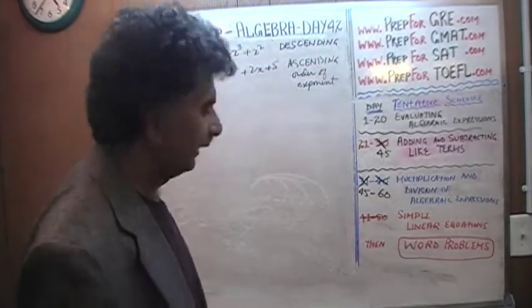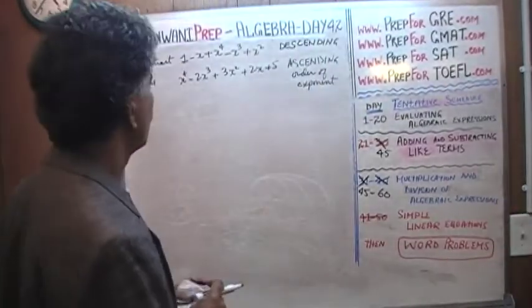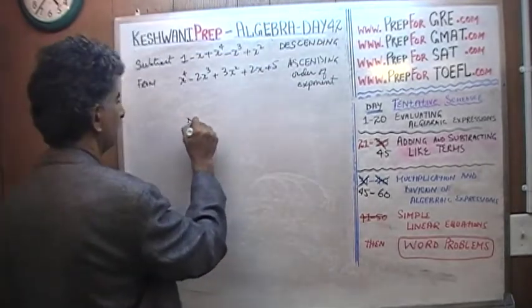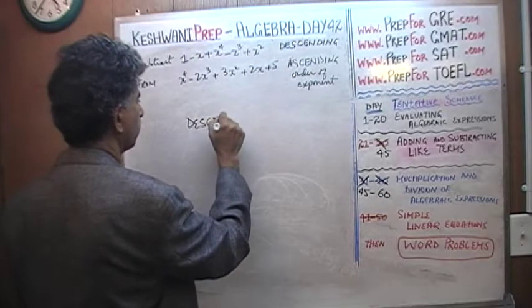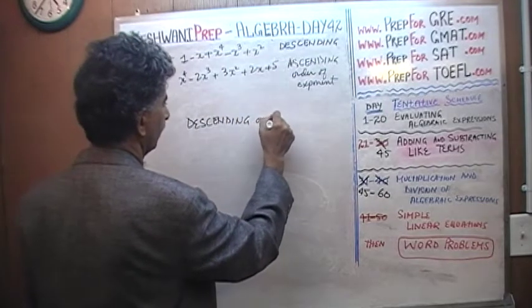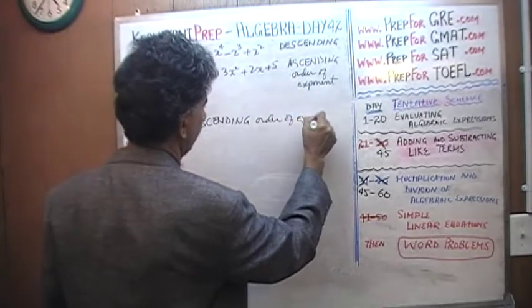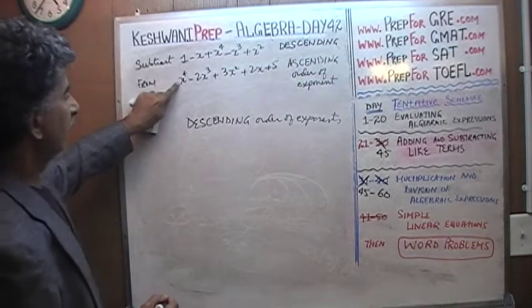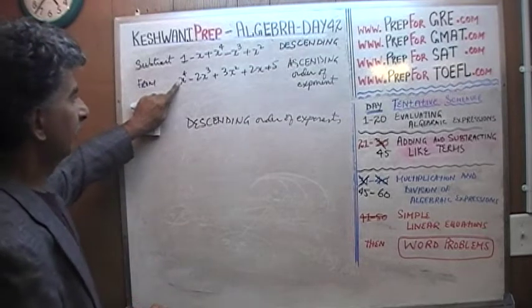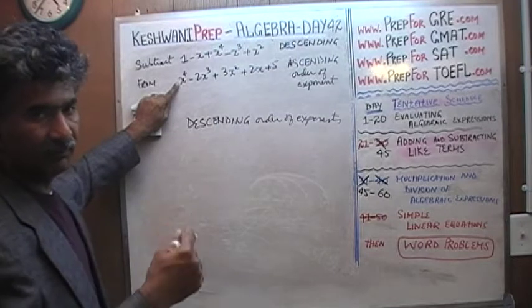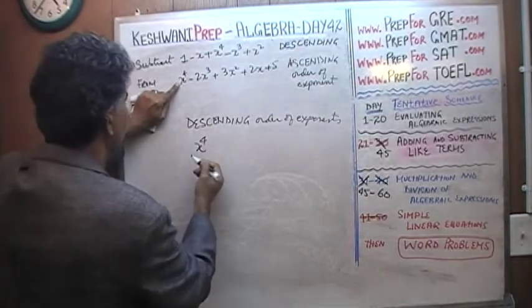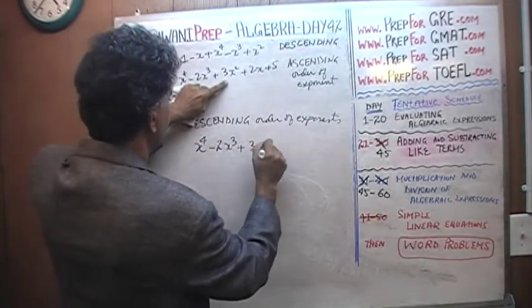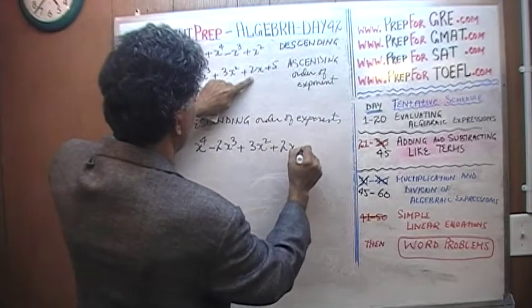These words that you see — descending and ascending — they are sitting there from yesterday. Let's talk about what that means. Descending order of exponents means that, for example, you see right here this expression — the second expression — is in descending order of exponents. The descending means it goes down. It starts with the exponent of 4, then it goes to 2x cubed, then 3x squared, then 2x, and finally we have 5.